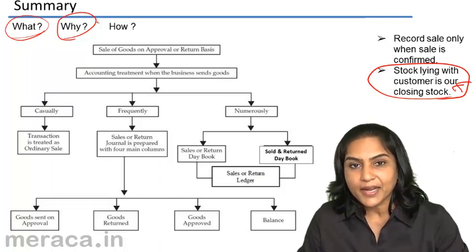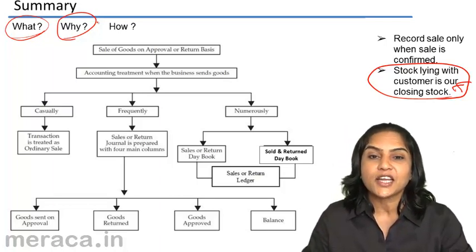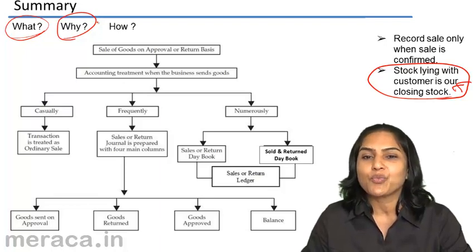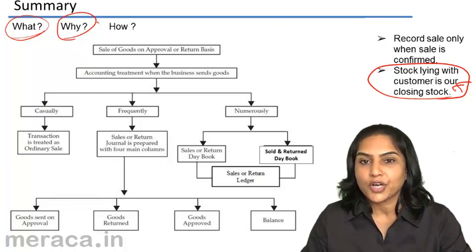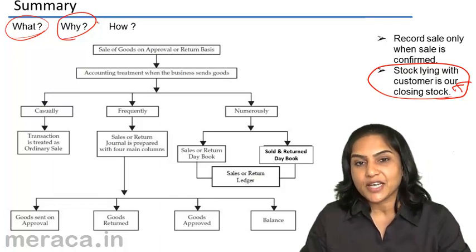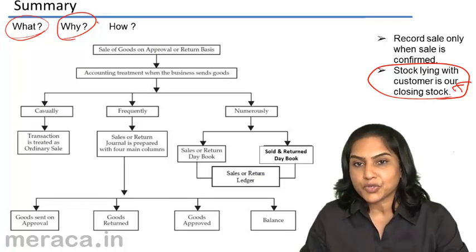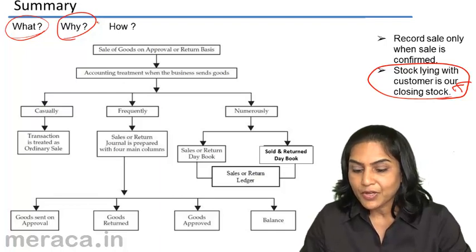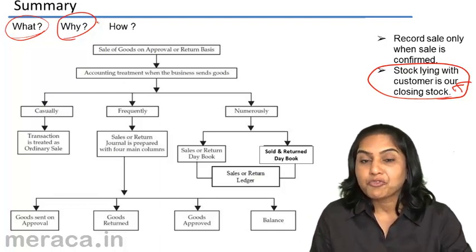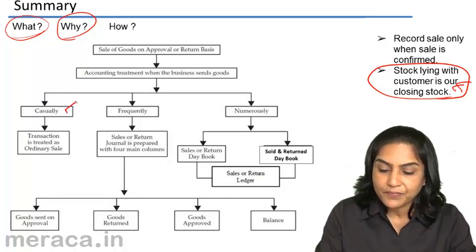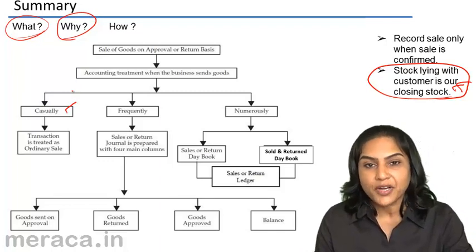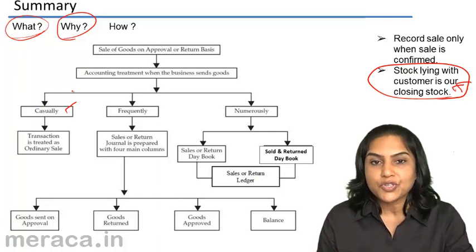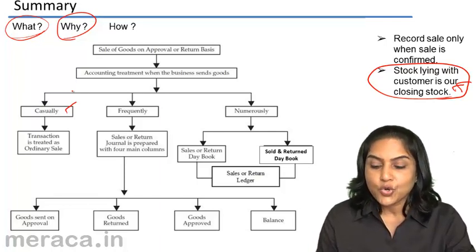How are the accounting records maintained? Accounting records are maintained depending on the degree of control we require, which is based on the frequency of the transactions. If we have only one or two transactions a month of goods sold on approval, we do not keep any separate set of records. We have a system of bookkeeping of three kinds. When sales are casual, it is simply treated as an ordinary sale, and any return of goods is recorded as a sale return. There is no separate set of books.